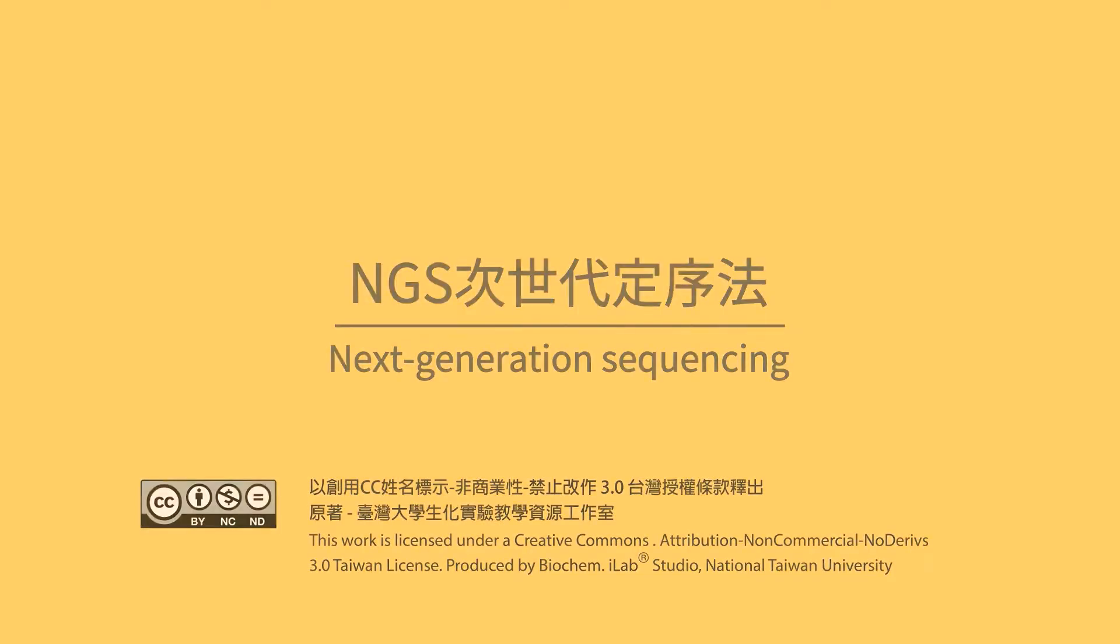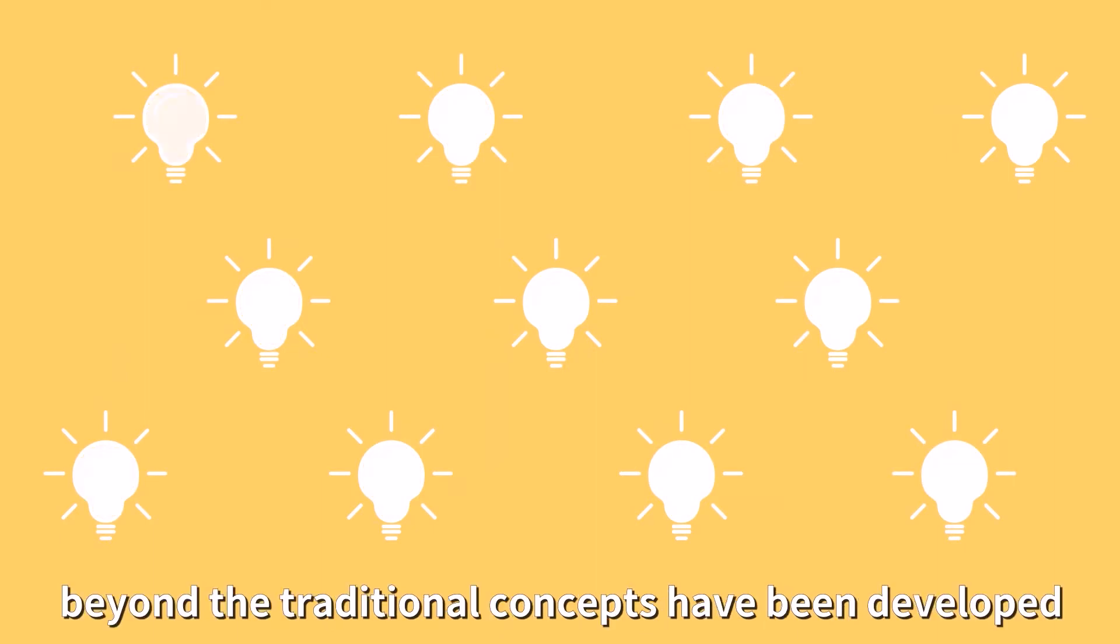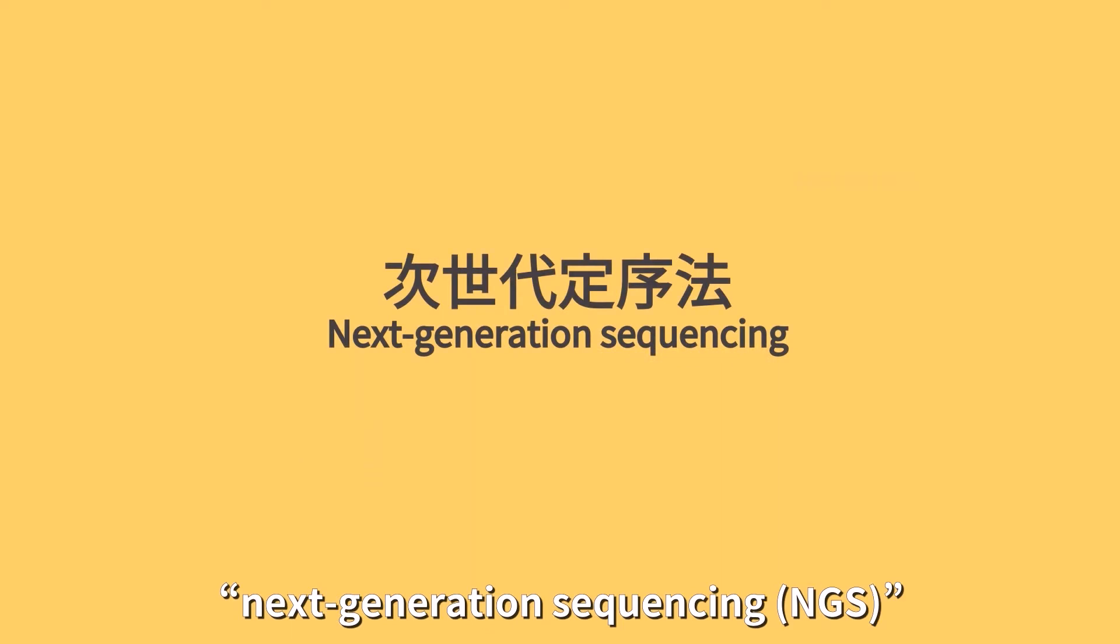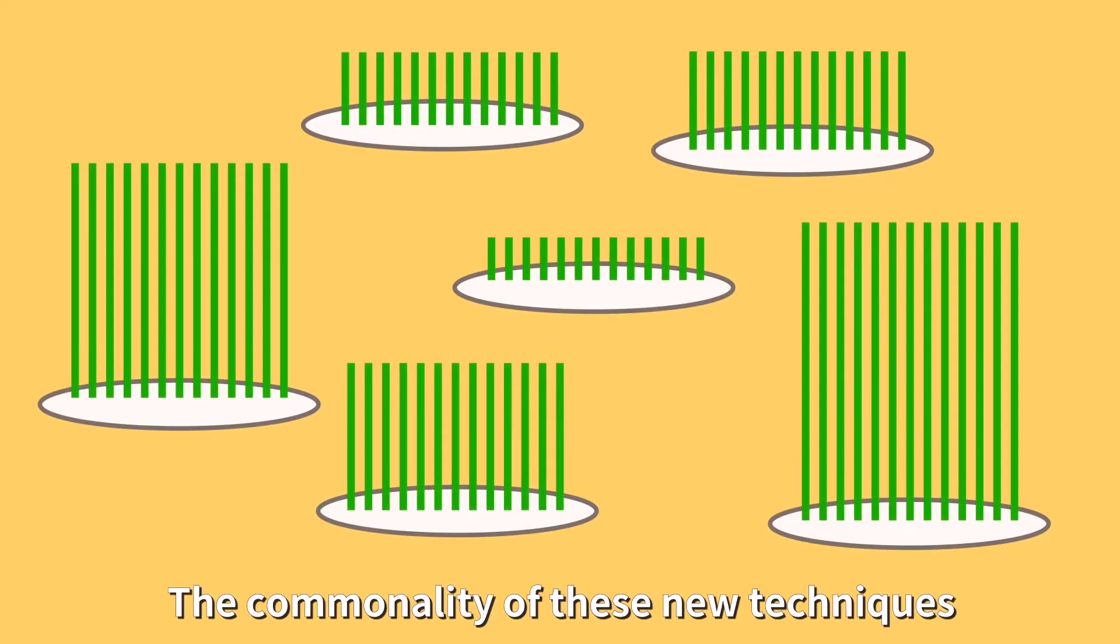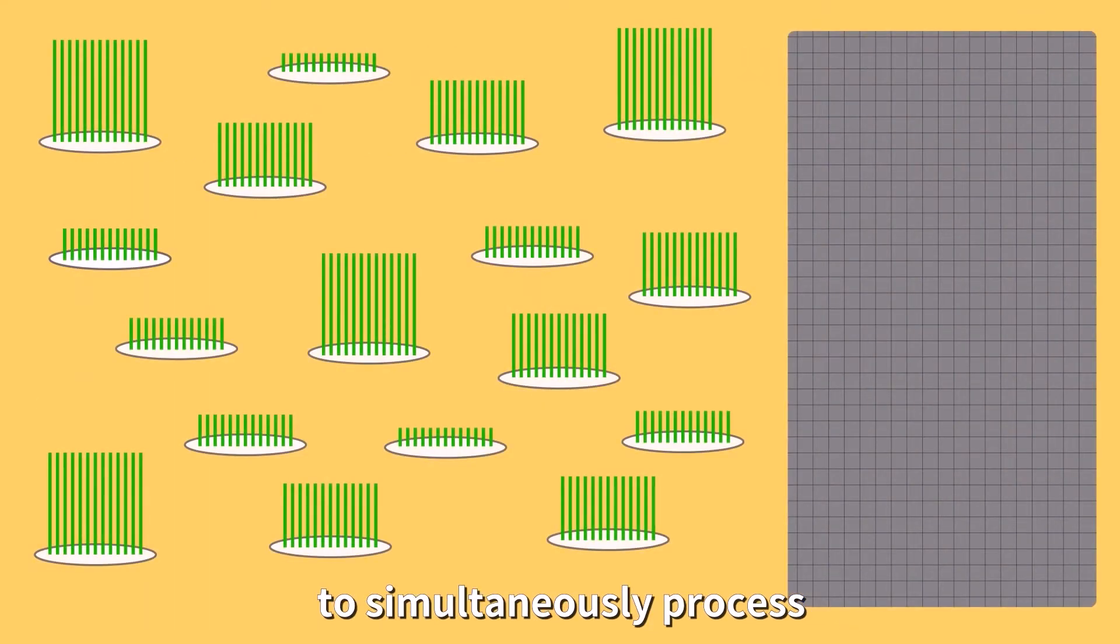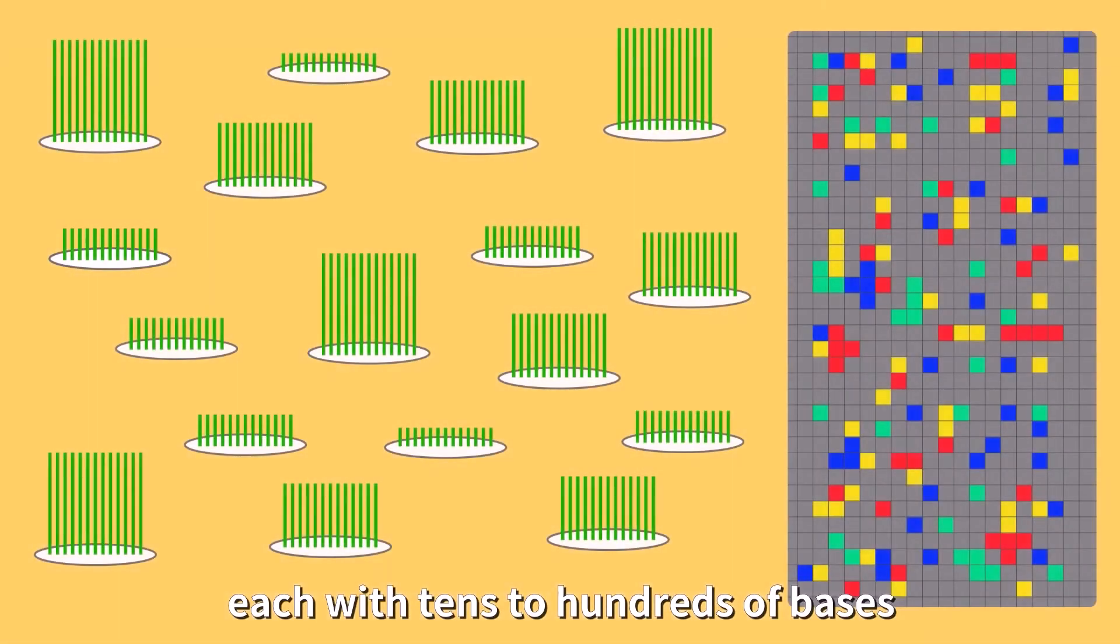Next Generation Sequencing. 30 years after the single chain termination method was discovered, many new sequencing techniques beyond the traditional concepts have been developed, collectively referred to as Next Generation Sequencing. The commonality of these new techniques is that they utilize massive parallel sequencing to simultaneously process millions to tens of billions of short-segment DNA, each with tens to hundreds of bases.